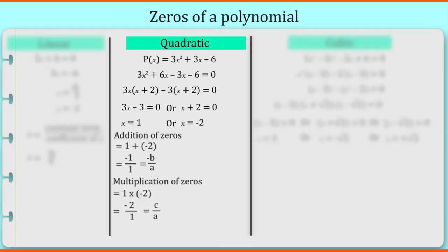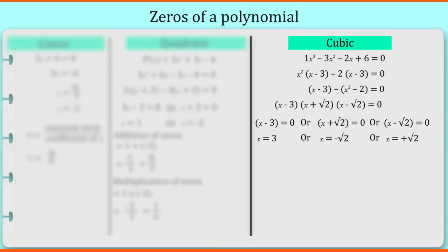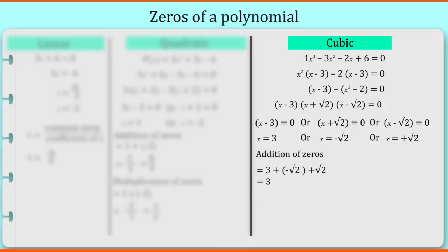Similarly, for the cubic equation, we have more than 1 zero. So we will add the zeros. We will get 3 that is 3 by 1 which is of the form minus b by a. And if we multiply zeros, we will get minus 6 that is minus 6 by 1 which we can write in the form of minus d by a.